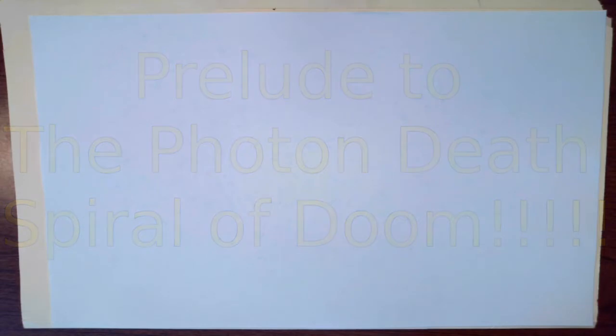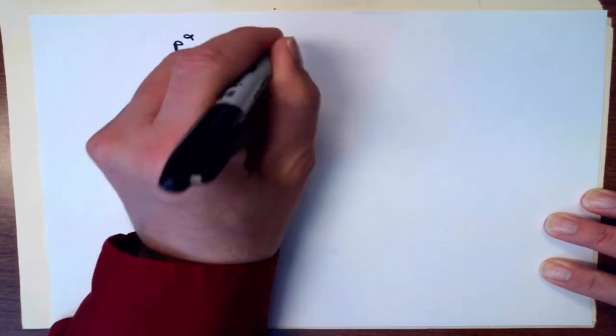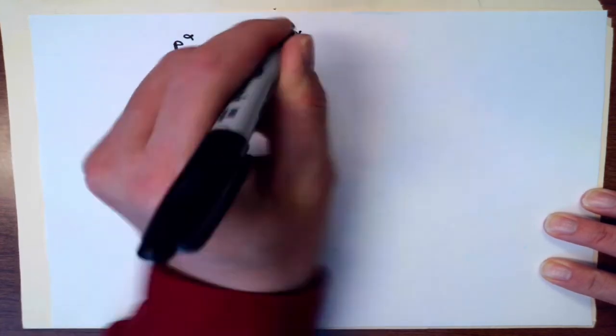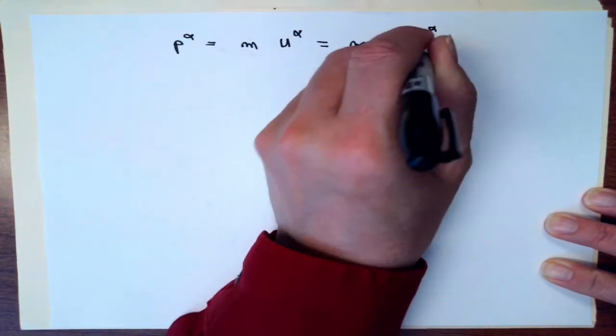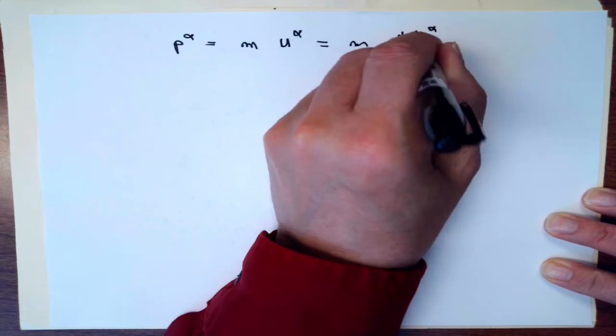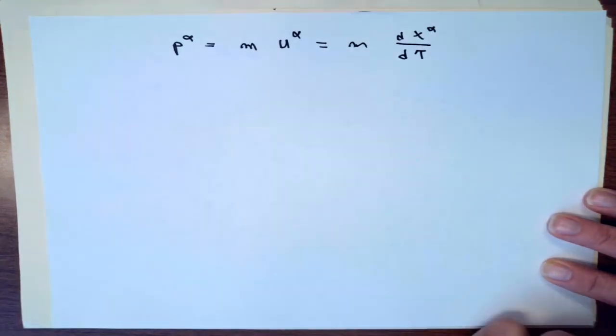For particles that have a non-zero mass, the 4-momentum is defined to be the rest mass multiplied by the 4-velocity. That is to say, p-alpha is the rest mass times u-alpha, which is the rest mass times the derivative of coordinate number alpha with respect to proper time.